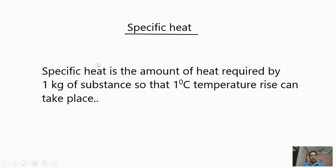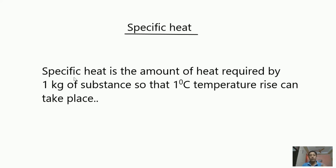So what is specific heat? Specific heat is the amount of heat required by 1 kg of substance so that 1 degree centigrade temperature rise can take place. For example, if 1 kg of water is there, it needs 4200 joules of heat energy so that its temperature can rise by 1 degree centigrade — from 15 to 16 degrees centigrade, 1 kg of water will need 4200 joules.